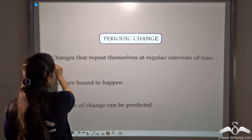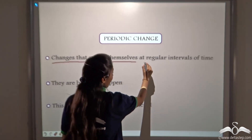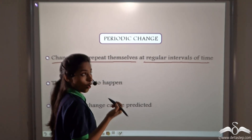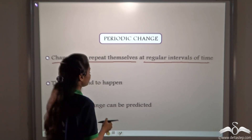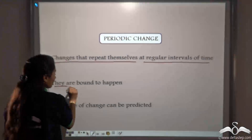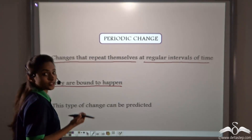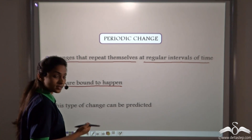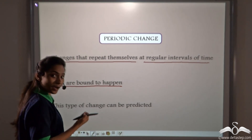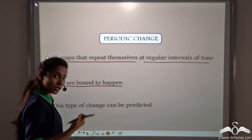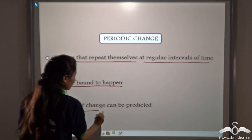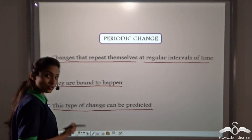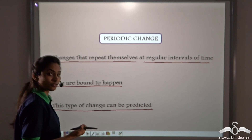What is a periodic change? Changes that repeat themselves at regular intervals of time — like the changing of day and night or rotation of the earth — are bound to happen. We know these changes will take place; the day will turn into night after 12 hours and night will turn back into day after 12 hours. This type of change can be predicted.